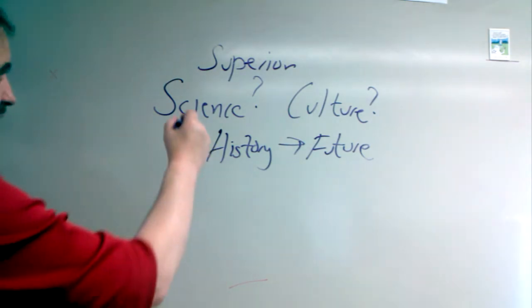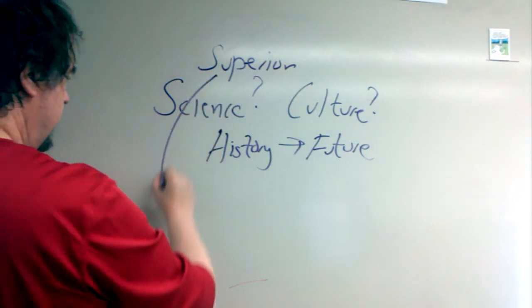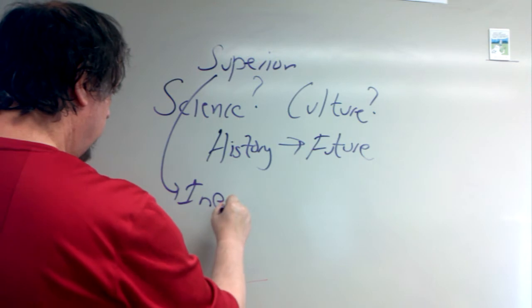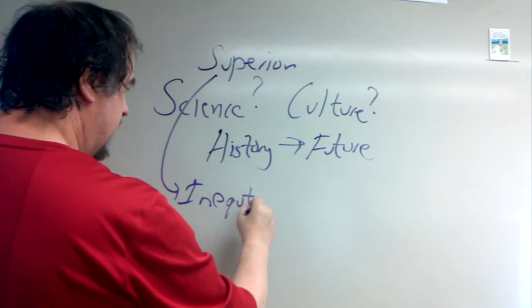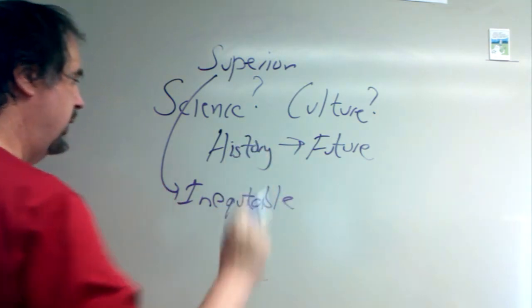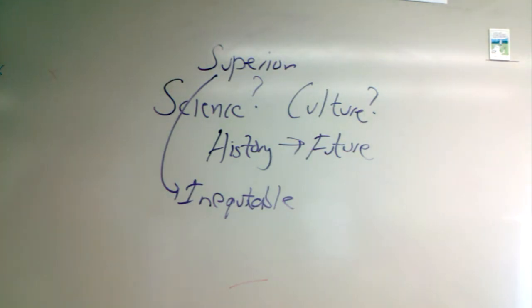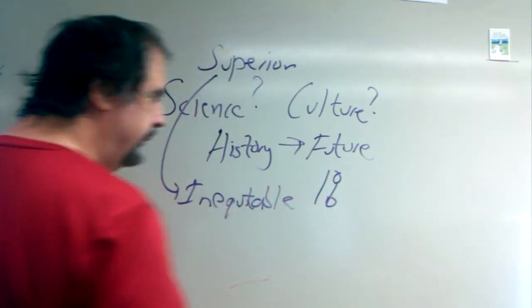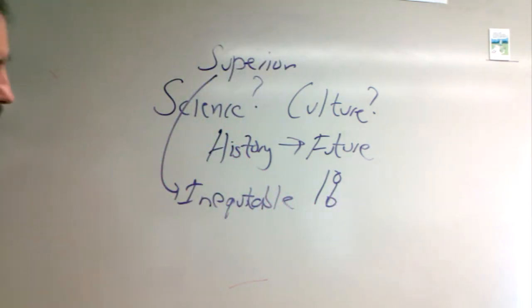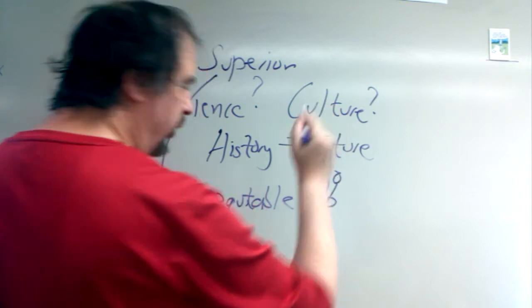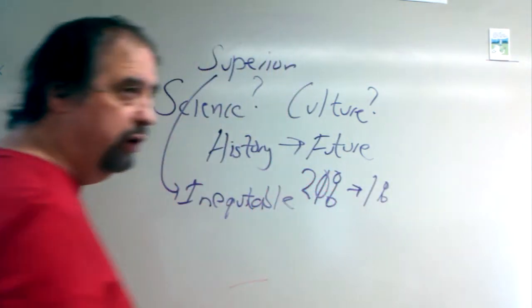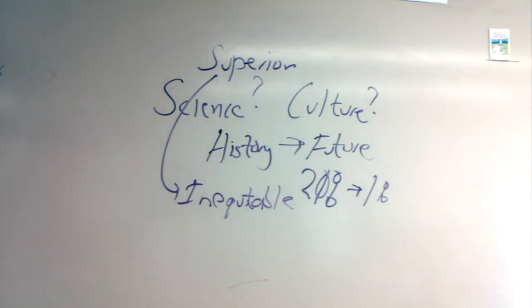The consequence of that triumph is that you live in the most inequitable period in history. One percent of the world's population, 20% of the world's population has access to only one percent of the resources. Why did humanity evolve like this, become so inequitable?